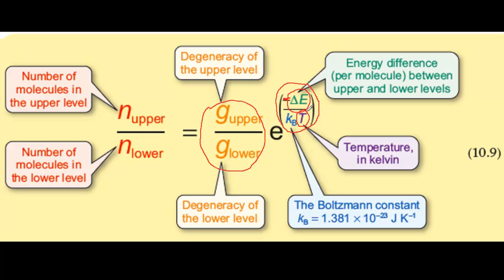If you increase the magnitude of delta E, the magnitude of n upper over n lower decreases, because of the negative sign in the exponent. Increasing T has the opposite effect. It increases the ratio.